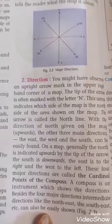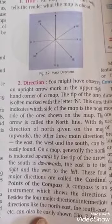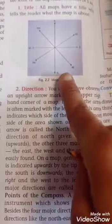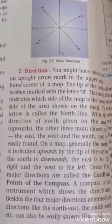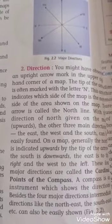On a map generally the north is indicated upwards by the tip of the arrow. The south is downwards, the east is to the right and west is to the left.